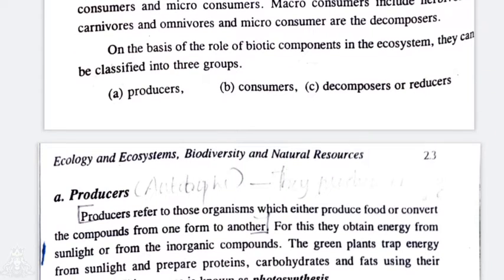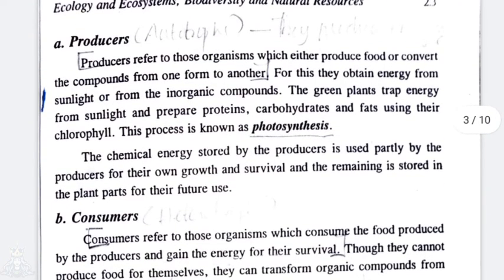Producers refers to those organisms which either produce food or convert compounds from one form to another. In our environment, producers are the green plants. The green plants trap energy from sunlight and prepare proteins, carbohydrates, and fats using their chlorophyll. This process is known as photosynthesis. The chemical energy stored by the producers is used partly for their own growth and survival, and the remaining is stored in the plants for future use.